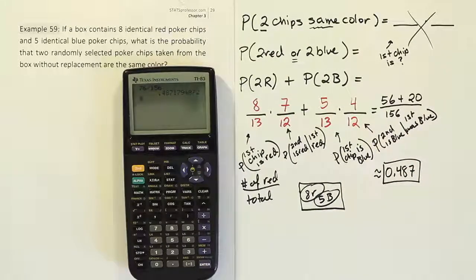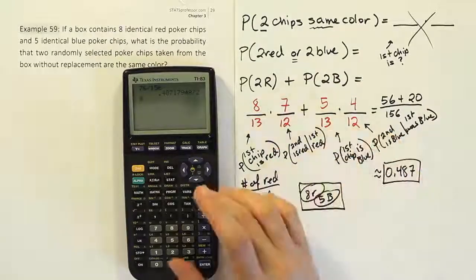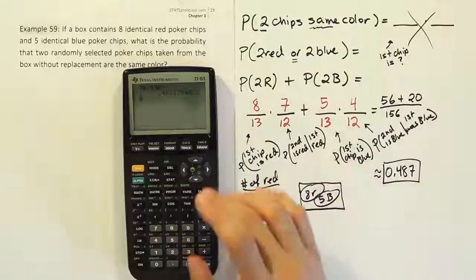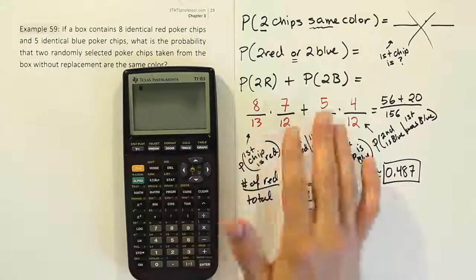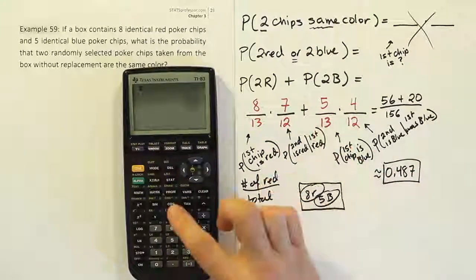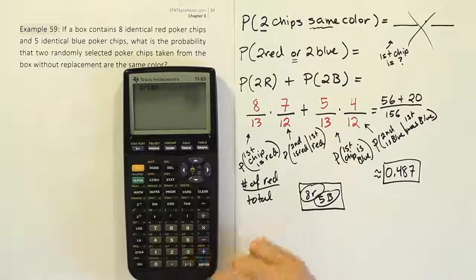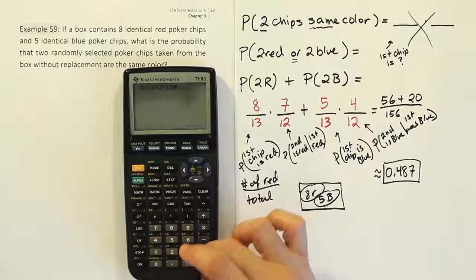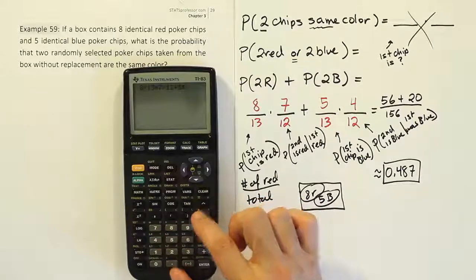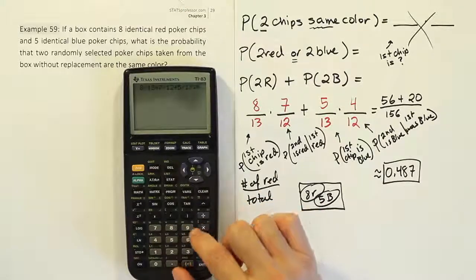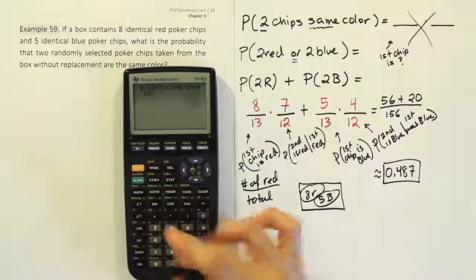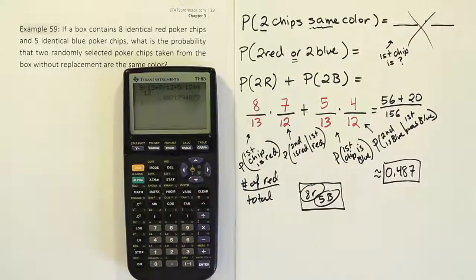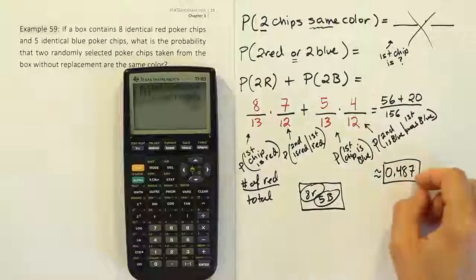Just so that you're comfortable using your calculator, some of you are not good with fractions so you may not understand how I got this fraction to turn out this way. If you wanted to actually work this out in your calculator straight out and get the same answer you just do 8 divided by 13 times 7 divided by 12, so I'm just doing it exactly as I see it, plus 5 divided by 13 times 4 divided by 12. If you do that you get the exact same answer 0.487. So if you're not comfortable simplifying fractions in your head then don't worry about it just type it all in your calculator, hit enter, you get the same exact solution.